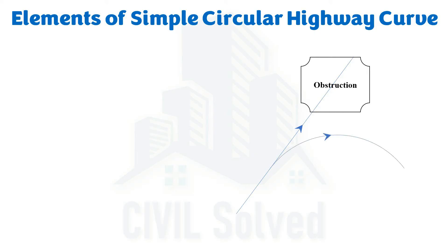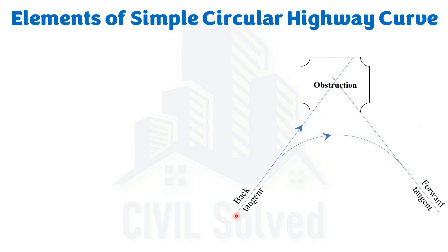Let's say we are providing a simple circular highway curve. A simple circular highway curve is a curve which has a constant radius — it means it is actually a part of a circle. Since it is a curve, a line that touches that curve is called a tangent. The curve ends at two points, so we name the two tangent lines as back tangent and forward tangent. The route of transit would be from the back tangent, then along the curve, and then along the forward tangent.